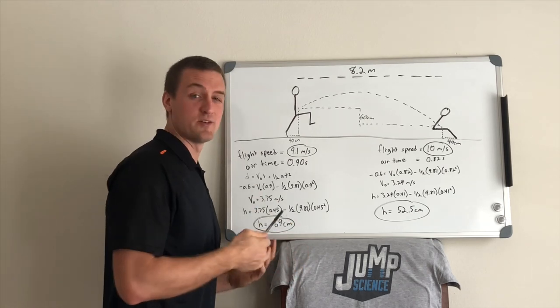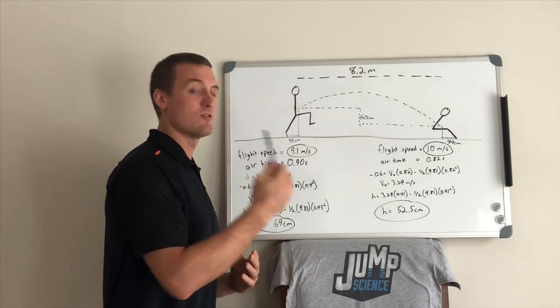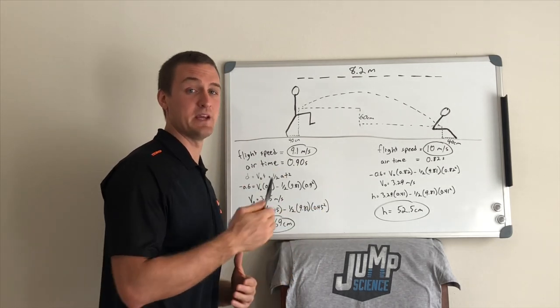So at first glance, these numbers might seem kind of doable, right? Because these vertical jumps are not super high.